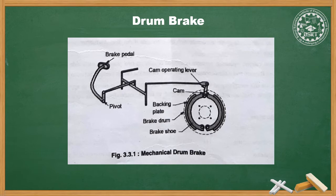The brake shoes are pulled inward or held by a retracting spring. When the brake pedal is pressed, the cam turns, expanding the brake shoes outward against the spring force. The brake lining comes in contact with the brake drum, causing friction between them. This friction opposes the direction of rotation and reduces or stops the vehicle speed. When the brake pedal is released, the retracting spring pulls back the brake shoes inward, releasing the brakes. These types of brakes are also called internal expanding brakes.